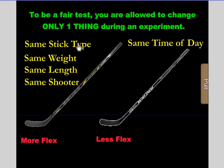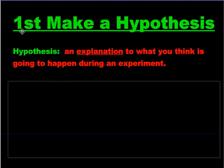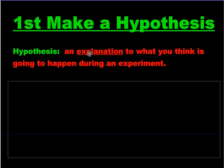All of these things here are called variables. Remember that word: variables. First, make a hypothesis — and this happens before you even start the experiment. Your hypothesis is a guess as to what's going to happen. You need to be in a position where you don't know what's going to happen. If you know which stick shoots the puck harder because results are already out there, then it's not a hypothesis. You have to not know the answer to make a hypothesis, and you have to explain why. So it's an explanation of what you think is going to happen during an experiment.